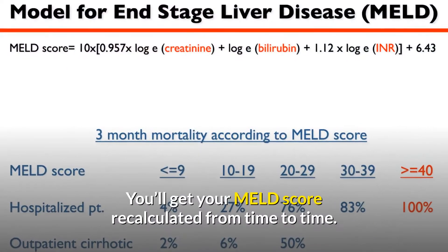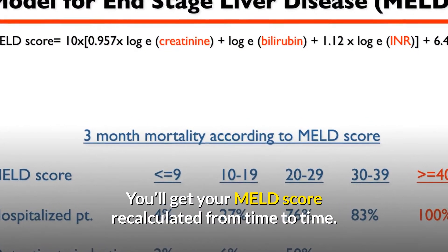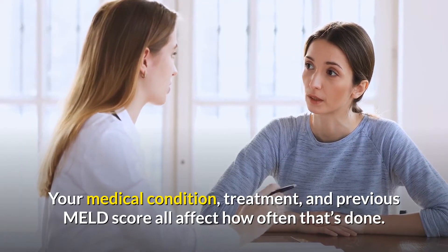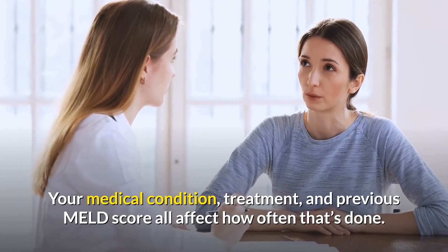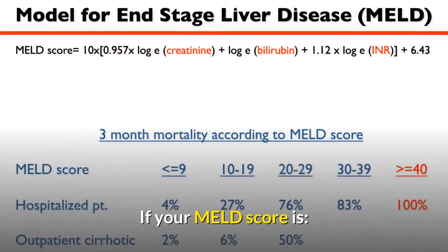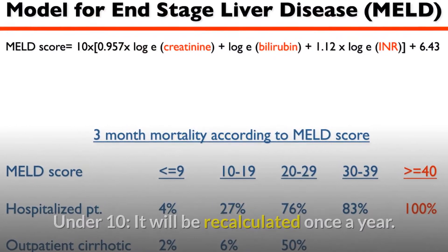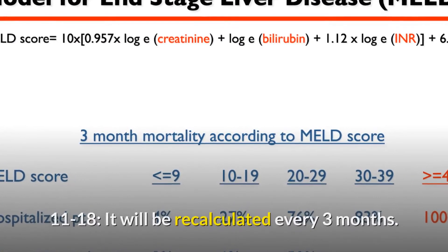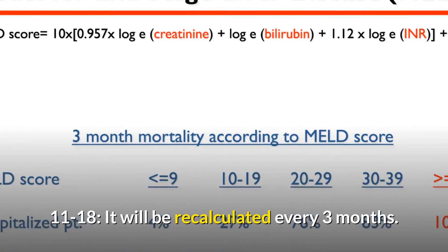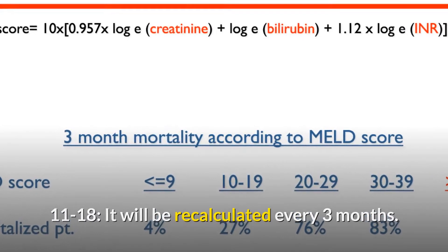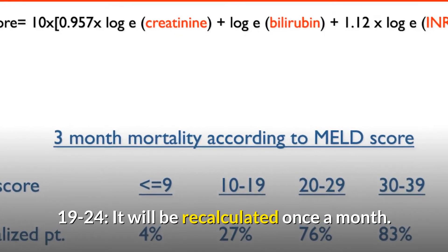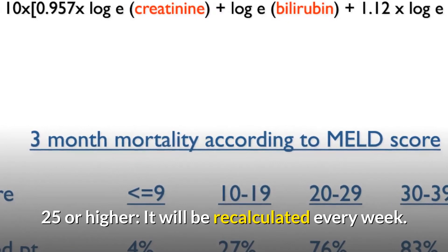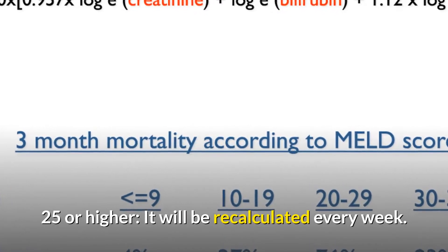You'll get your MELD score recalculated from time to time. Your medical condition, treatment, and previous MELD score all affect how often that's done. If your MELD score is under 10, it will be recalculated once a year; 11 to 18, every three months; 19 to 24, once a month; 25 or higher, every week.